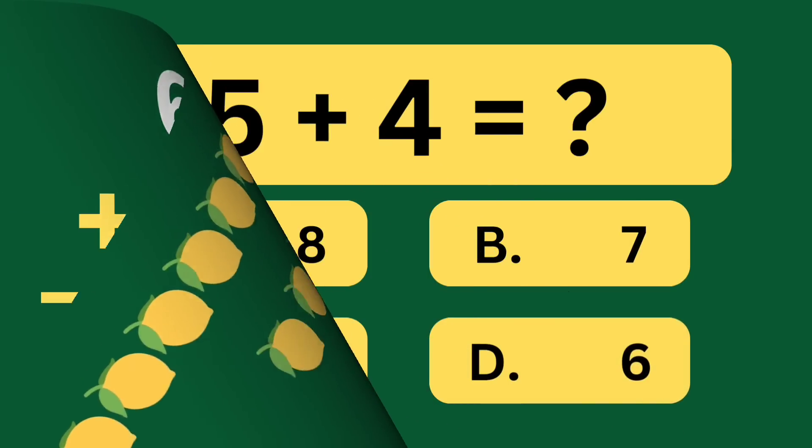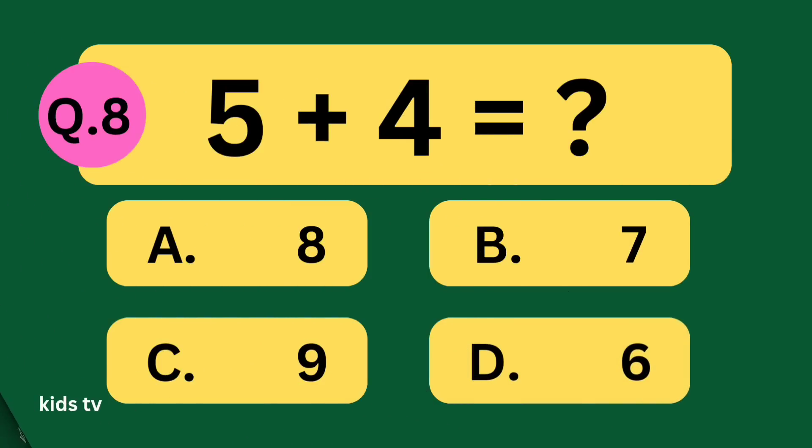5 plus 4 equal what? A: 8, B: 7, C: 9, D: 6.